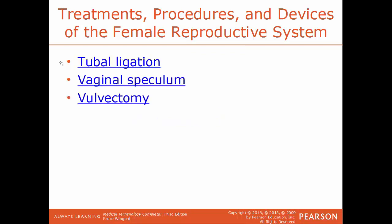Tubal ligation is the formal name for when a woman has her tubes tied — to ligate means to tie off something. The fallopian tubes are taken out, cut, and the ends are cauterized or tied off — the same process as a vasectomy in males but done to the fallopian tubes in females. The vaginal speculum is an instrument used to widen the opening to the vagina so you can see the cervix more easily. Vulvectomy is the surgical removal of part or all of the vulva.